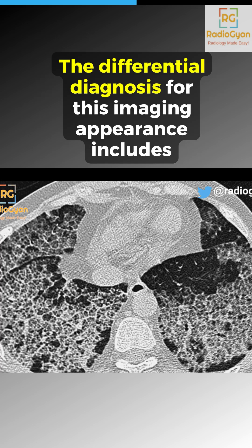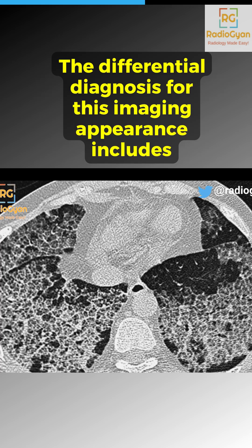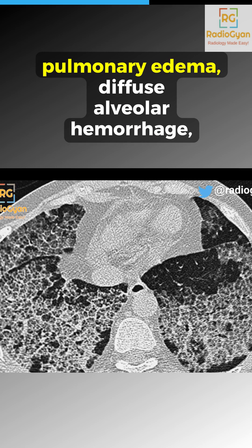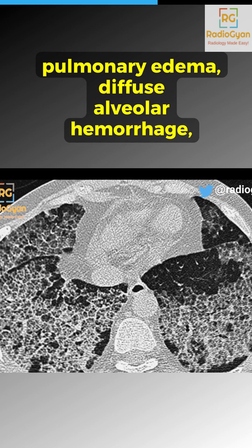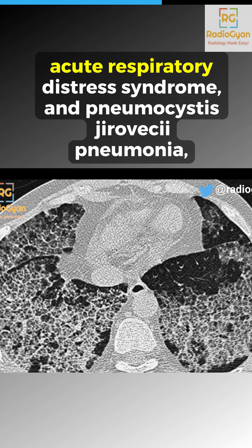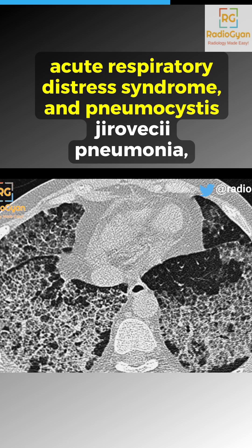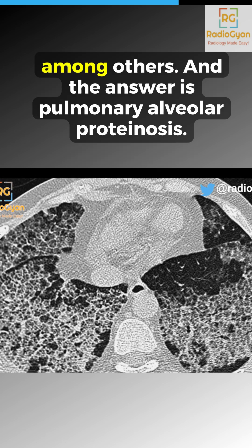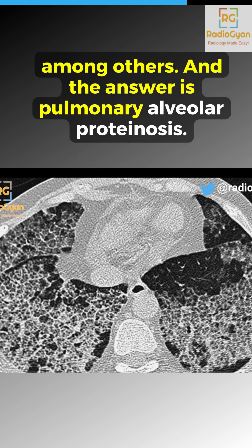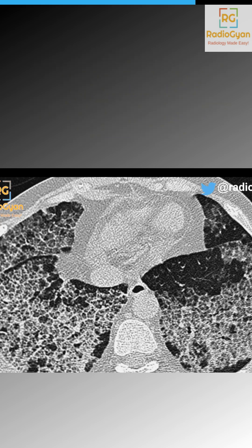The differential diagnosis for this imaging appearance includes pulmonary edema, diffuse alveolar hemorrhage, acute respiratory distress syndrome, and Pneumocystis jirovecii pneumonia, among others. And the answer is pulmonary alveolar proteinosis.